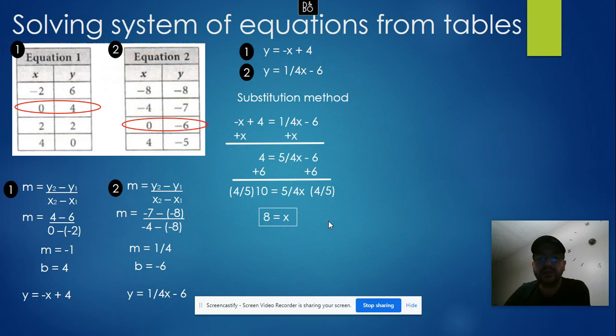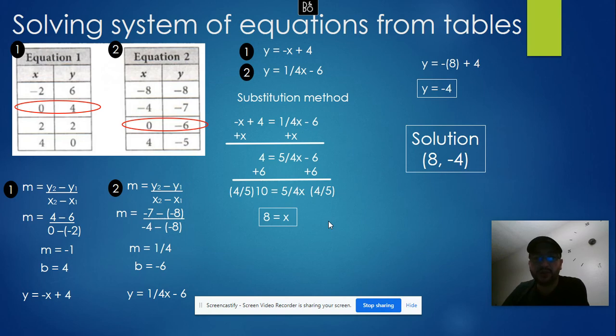That's the first part of the solution. Now substitute the value of x into one of the equations. I'll use the first one: y equals negative x plus 4. Substitute x with 8: y equals negative 8 plus 4, which equals negative 4. So my solution is 8 comma negative 4. That's the solution for this system of equations.